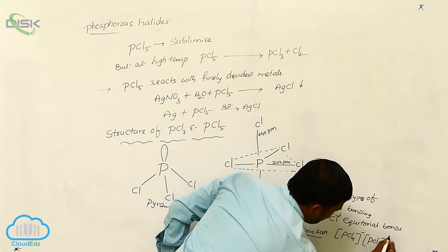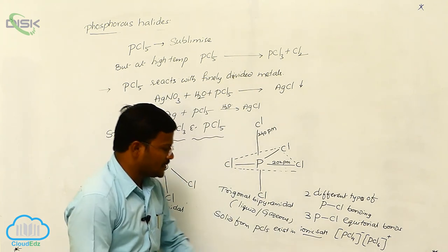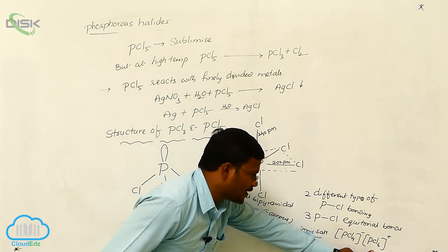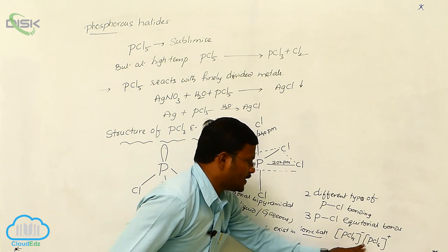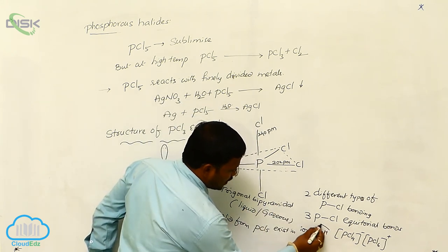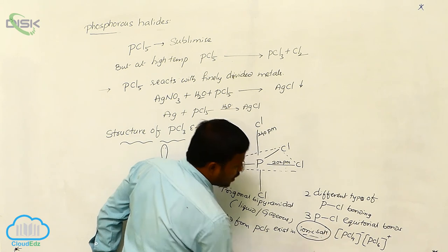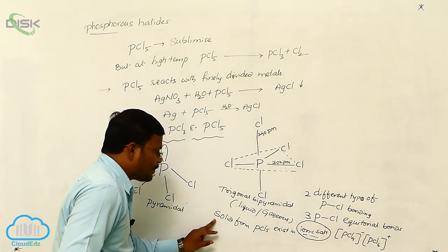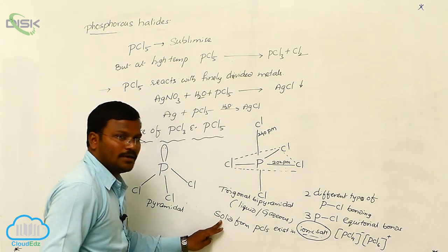It is anionic and cationic portions that interact with each other. This is the ionic salt form or dipolar ionic salt form exhibited by phosphorus pentachloride in its solid physical state.